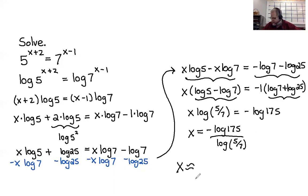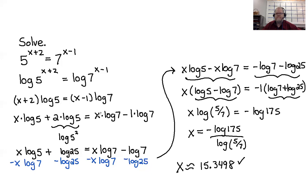For the approximate answer, type that into your calculator — going to four decimal places, the answer is 15.3498. That solves the problem. We used our logarithm properties quite a bit. The key point: whenever you have an exponential equation where one base cannot be written in terms of the other base, that's when you'll need to apply the properties extensively.